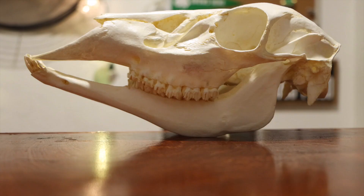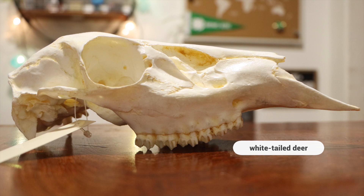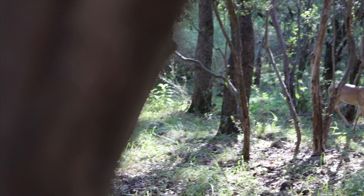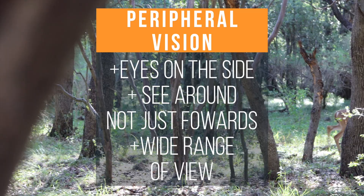But take this whitetail deer skull. Do the eyes face forward like our eyes? No, they face more toward the side. This gives the deer a much wider field of view than us humans, because a deer needs to be able to see if a predator is sneaking around it or even behind it. This wider range of vision is called peripheral vision — peri meaning around, like in the word perimeter.